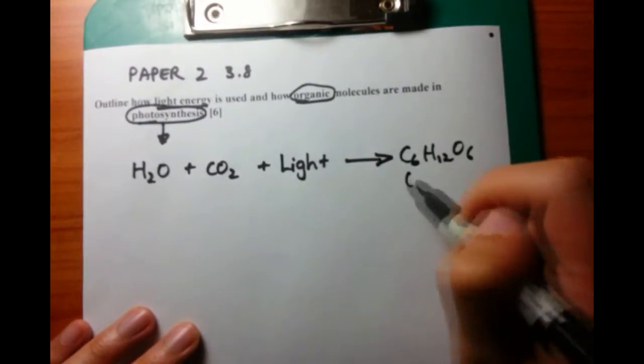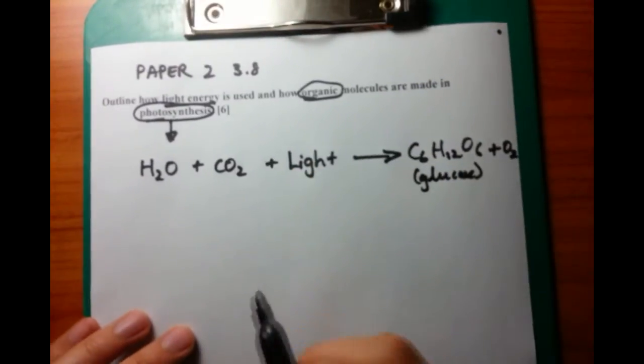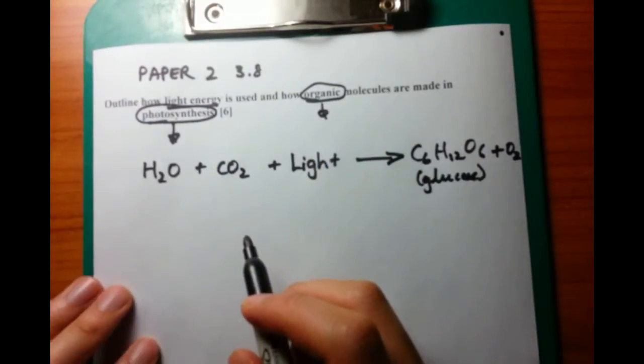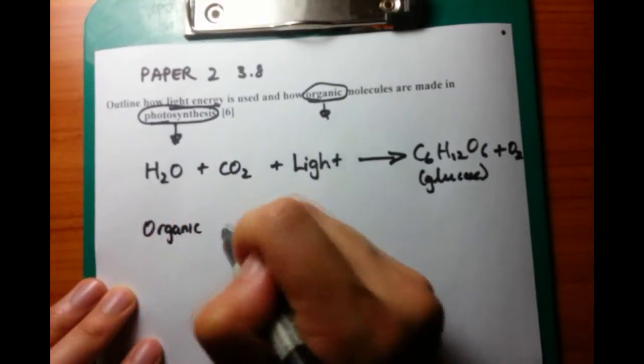For photosynthesis, I've drawn out the equation, which is water plus carbon dioxide and light gives you an organic molecule called glucose as well as oxygen.